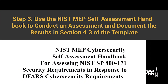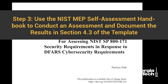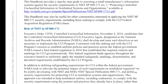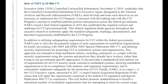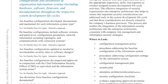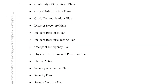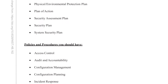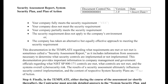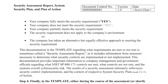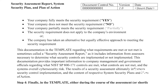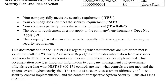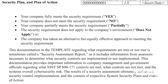Step 3: You should use the NIST MEP Handbook to conduct an assessment of your information system and document the results of this assessment for each security requirement in Section 4.3 of the template. The handbook provides a step-by-step guide to assessing a contractor's information system against the security requirements. While you will use the handbook to conduct the assessment, the results are to be marked, recorded, and documented for each of the 110 controls in Section 4.3 of the template. For each requirement, you are required to indicate whether your company fully meets the requirement (yes), does not meet it (no), partially meets it (partially), the requirement does not apply to your environment (does not apply), or your company has taken an alternative but equally effective approach (alternative approach).